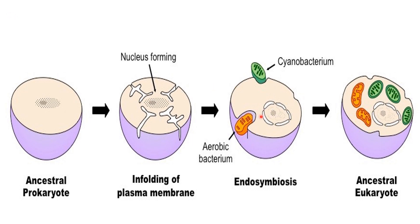Mitochondria are membrane-bound organelles that produce energy for the cell, while chloroplasts are also membrane-bound organelles that capture sunlight and use it to make food for the cell. Both are thought to have originated from endosymbiosis by the engulfing process of phagocytosis. This is the summary of endosymbiosis theory.